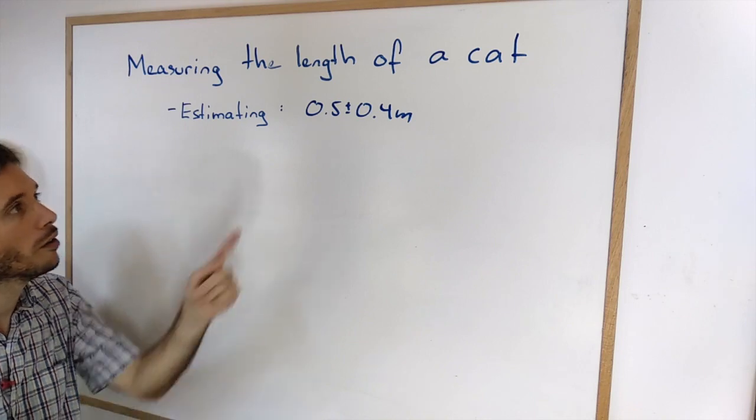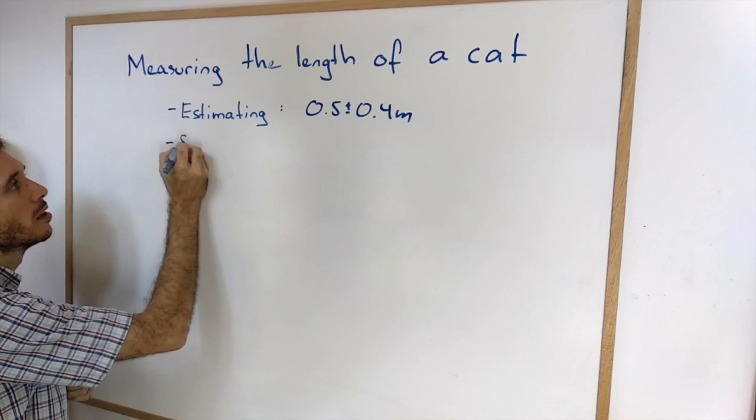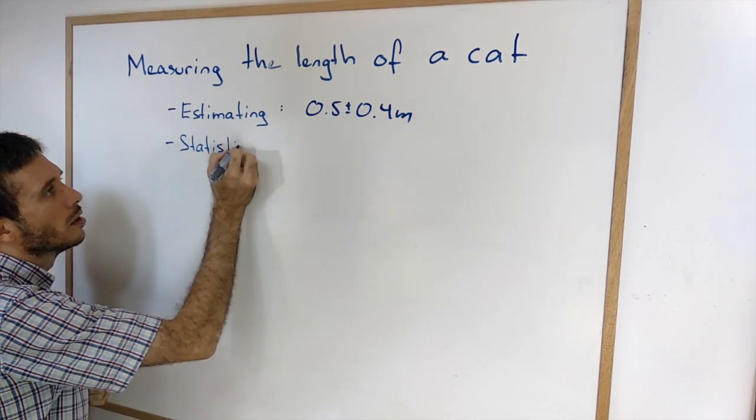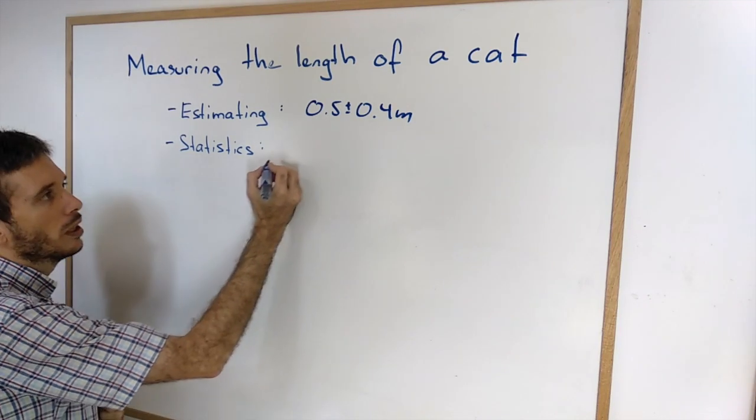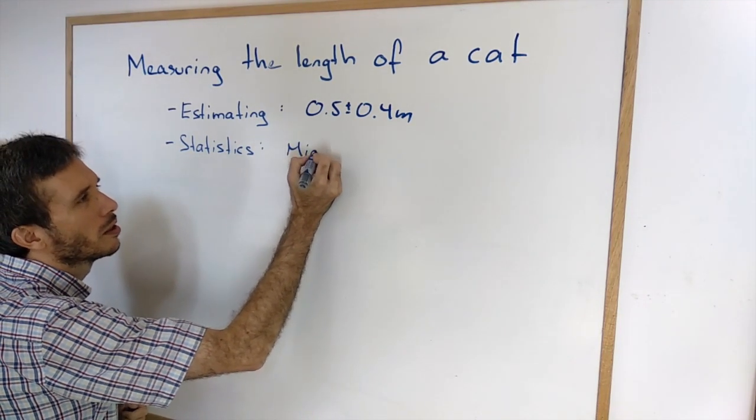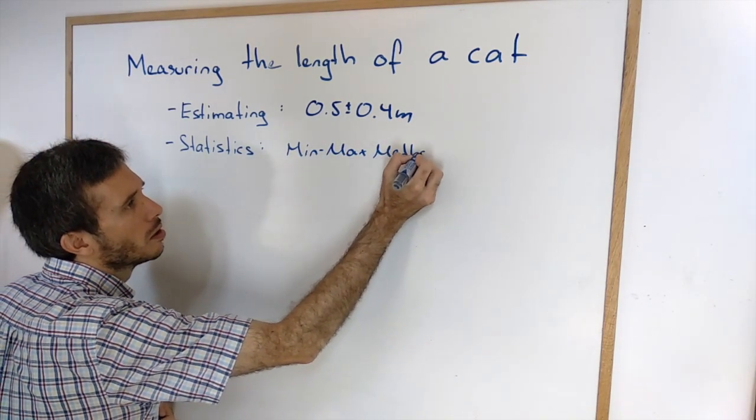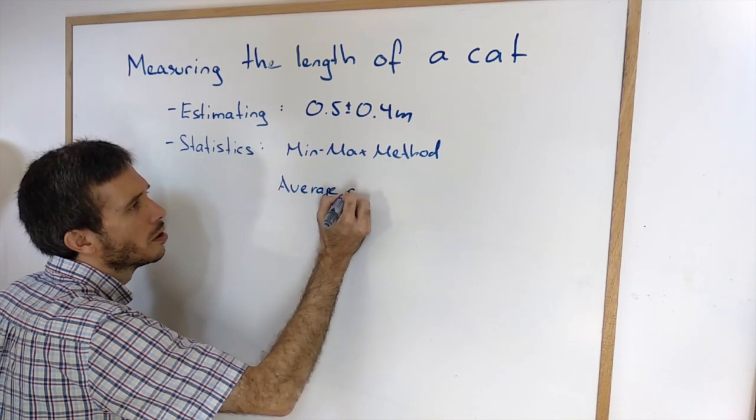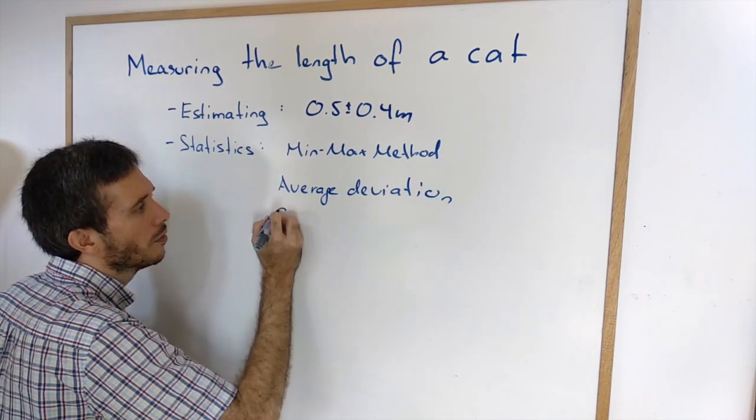Is there another way of figuring out the uncertainty? Yes, there is. We can use statistics. In these statistics, we have three different methods of doing it. We have the min-max method, we can use average deviation, and we can use standard deviation.